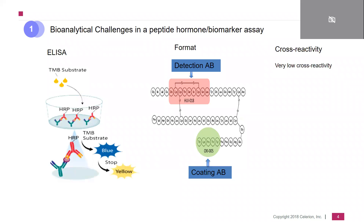When we started developing the assay, we based the assay development on a kit — very simple, depicted here — where you have a coating antibody squeezed in between the insulin, and then you go with the secondary detection antibody coupled to HRP. Upon administration of the substrate, you have a change in color which is then measurable. The format is very simple: you have a coating antibody OXI005 and a detection antibody UA018.